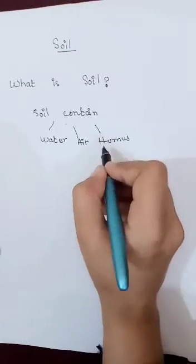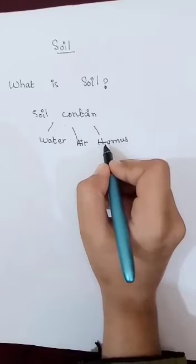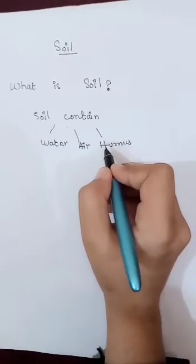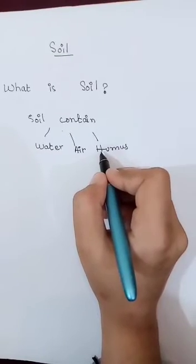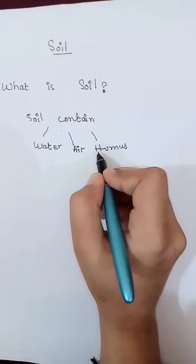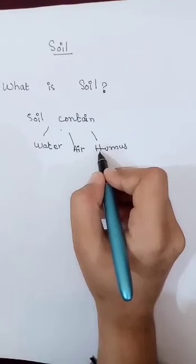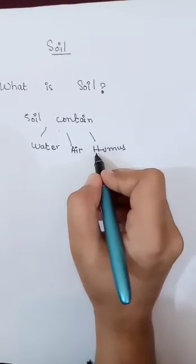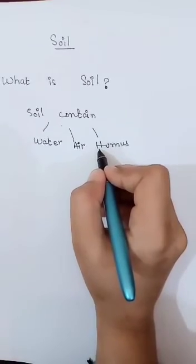How does soil contain humus? Humus is mostly made up of material from dead animals and plants that slowly rot away. It helps to keep the soil in good condition in different ways, including breaking it down to provide useful minerals which plants use for healthy growth.